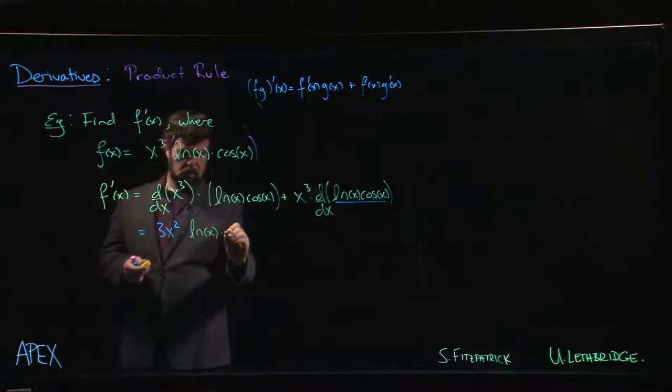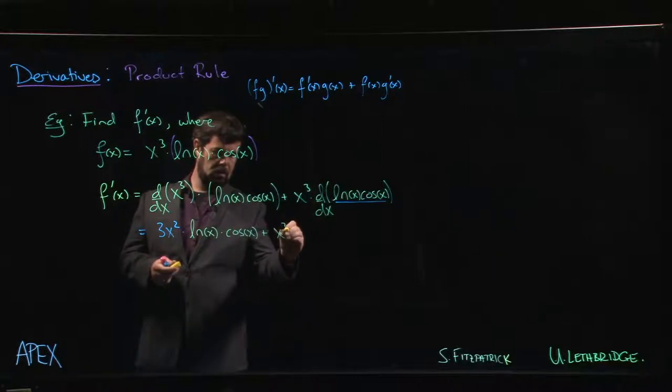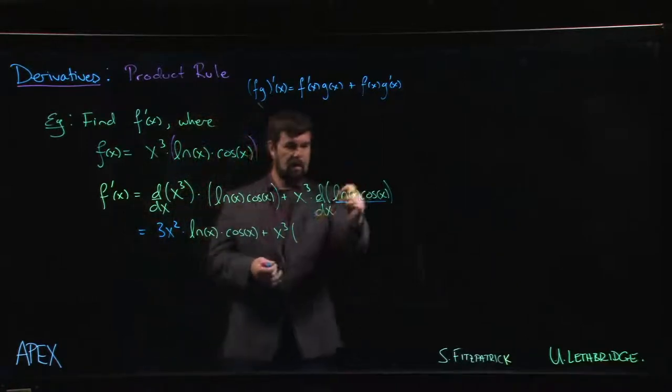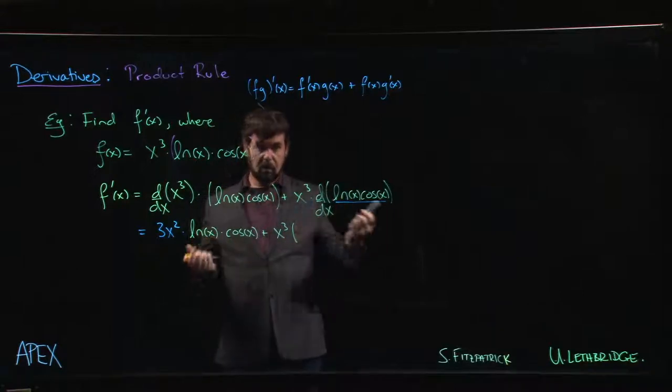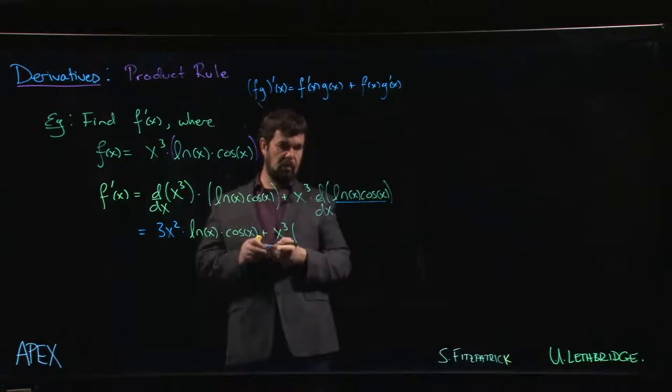Times the other two terms. And then x cubed, and we have to multiply by the derivative of this remaining product, which means using the product rule again. So derivative of the first—the derivative of the natural log is one over x.